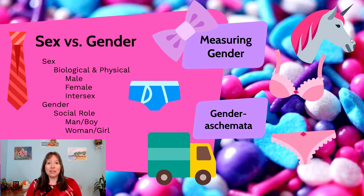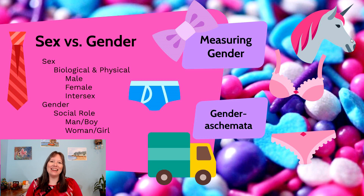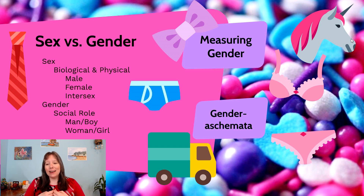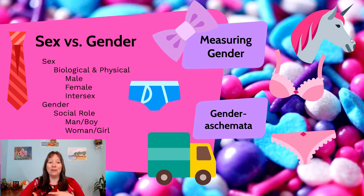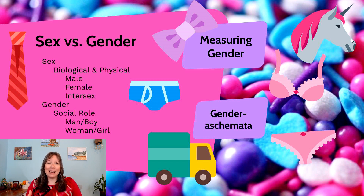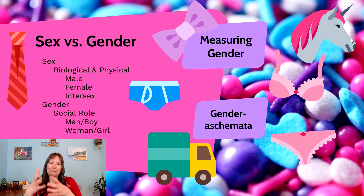We talked about sexual development a bit back in unit 2 on genetics and prenatal development. In that unit we talked a lot about the biological and physical development of one's sex — that is, the sex of the fetus or embryo becoming male, female, or intersex. By biological sex we're really talking about physical anatomy, chromosomes, genetics, or hormones — the biological components.